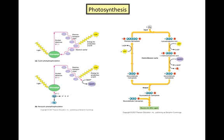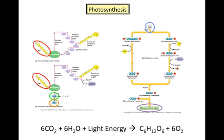Photosynthesis is essentially the opposite of cellular respiration in that, during the process of photosynthesis, carbon dioxide, water, and energy from the sun react to produce glucose and oxygen in the overall equation: 6CO2 + 6H2O + light energy yields C6H12O6 + 6O2.